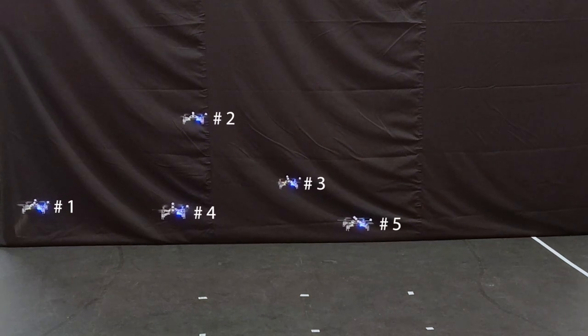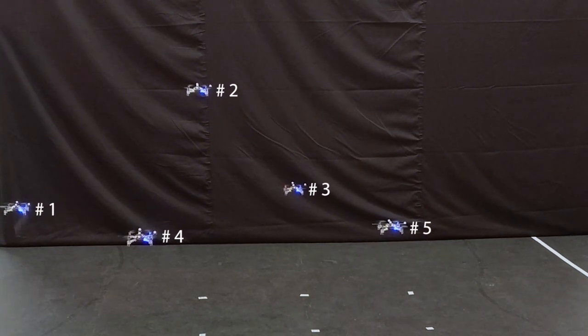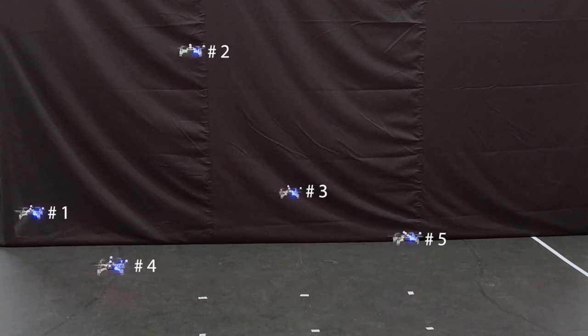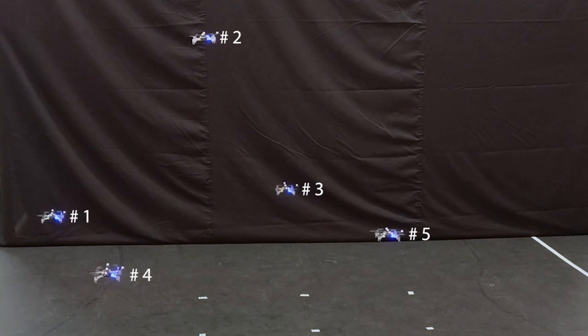We present a distributed formation control strategy for a team of agents with distinct labels to autonomously achieve a desired geometric shape.